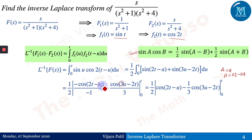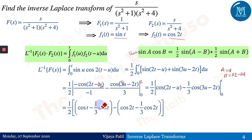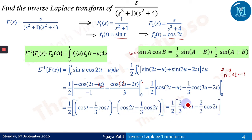Replacing u with t (upper limit) and u with 0 (lower limit): the upper limit gives cos(t), and combining signs carefully yields ½·[cos(t) − (1/3)cos(t)] minus the lower limit term ½·[−(1/3)cos(2t)]. After simplification, multiplying through and collecting terms gives the final answer: (1/3)[cos(t) − cos(2t)].